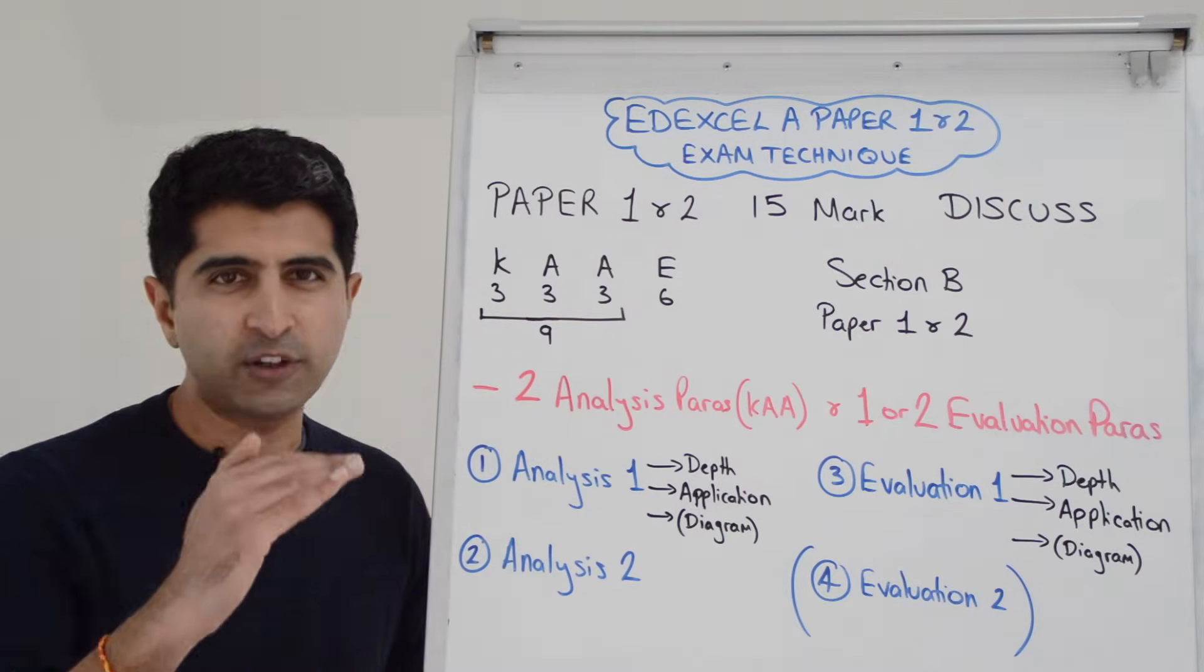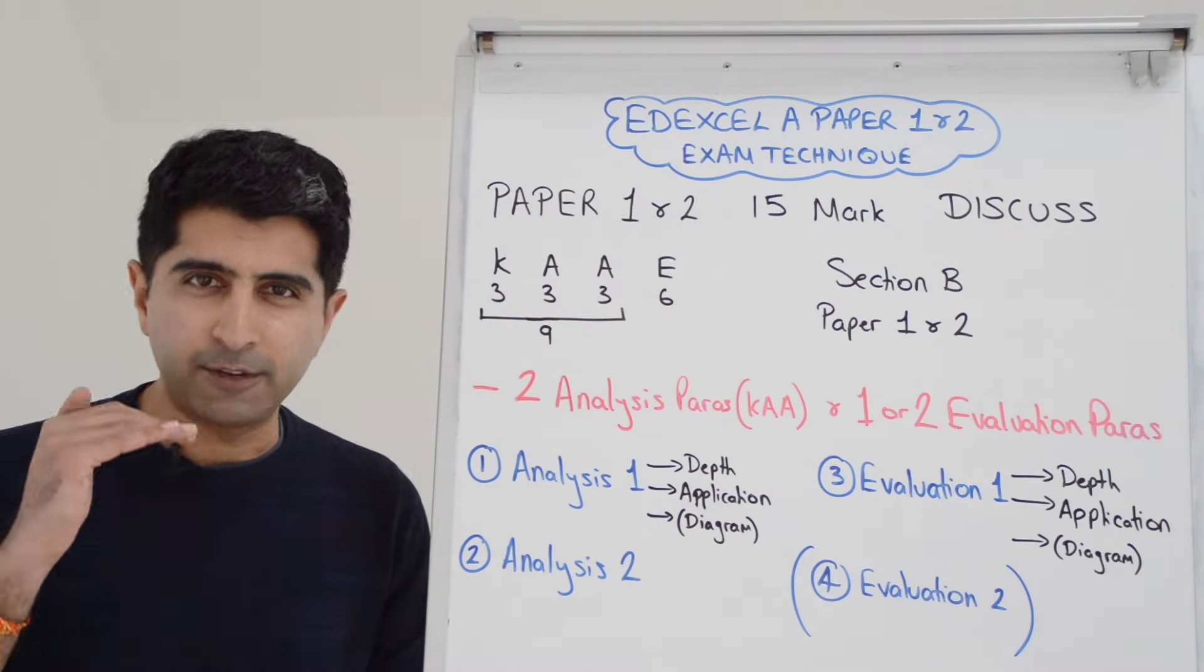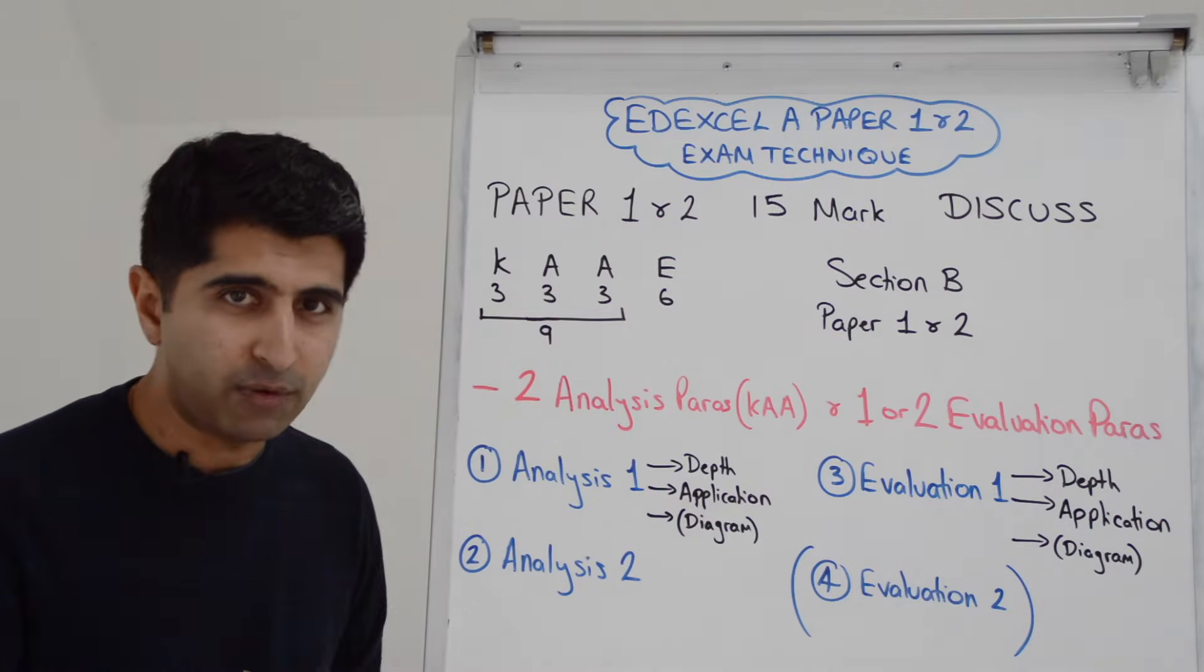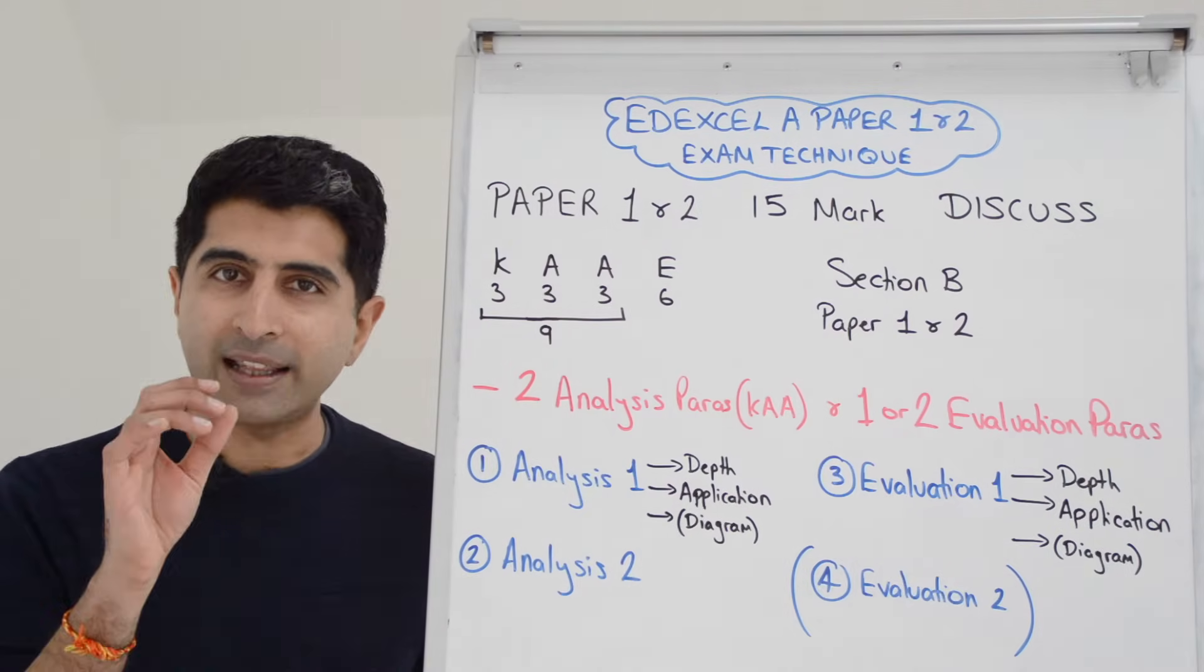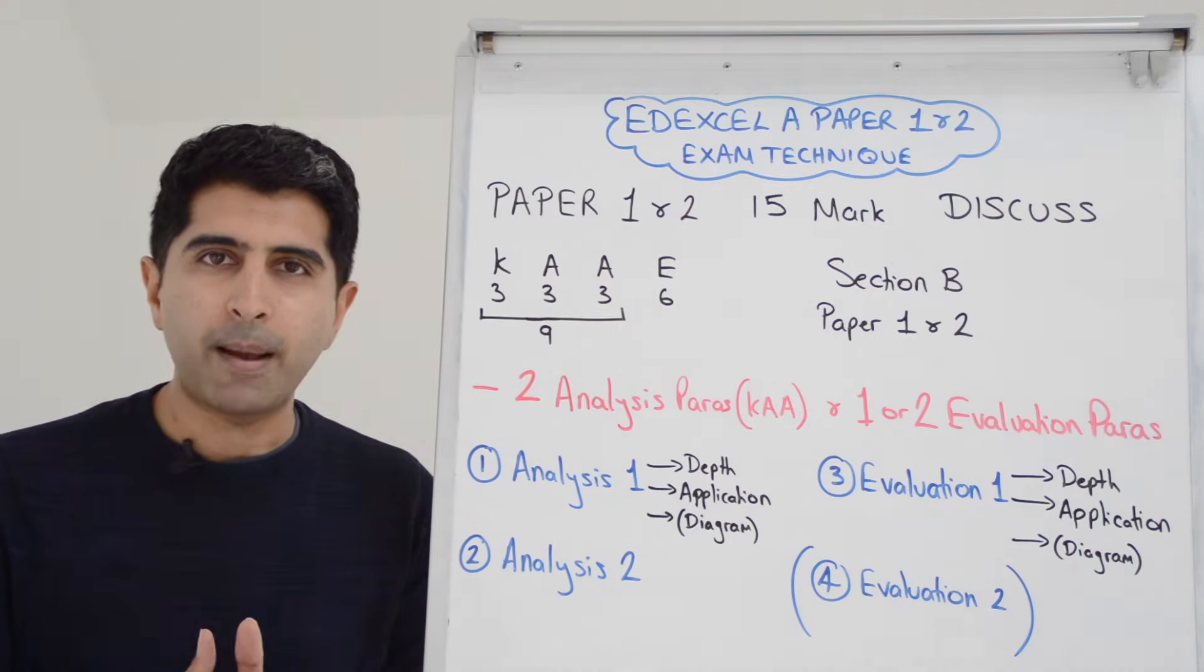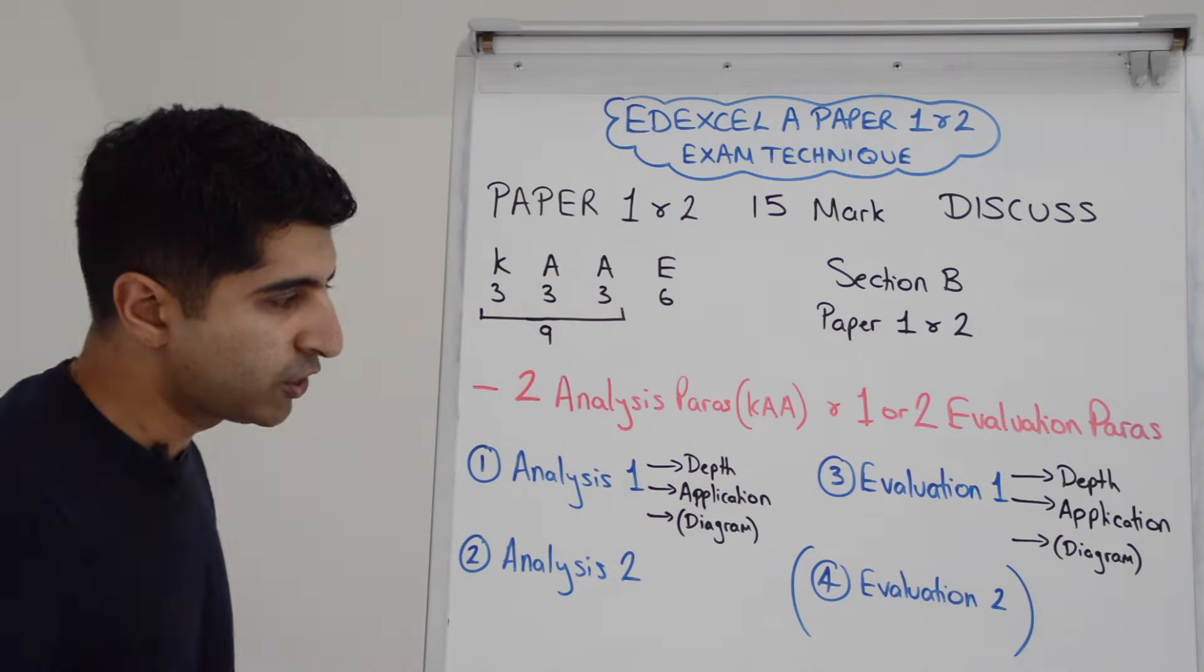You make your point, or you start with a policy, and you develop it in maximum detail, as much detail as you can write that's relevant to answering the question. You're looking for application, as always, in section B. You get that from the extracts. Integrate your application, integrate your example within your writing. You're good to go.